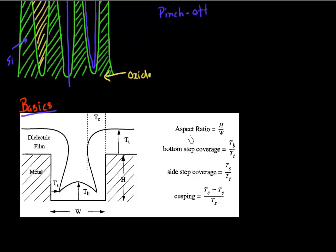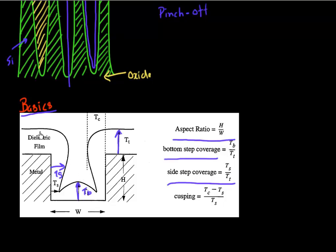The key metrics we use to judge fill quality in high aspect ratio structures are two coverage ratio terms. One is called bottom step coverage, which refers to the bottom thickness versus the thickness on the top. The other is sidewall coverage, which refers to the thickness deposited on the side versus the thickness on the top. For conformal deposition, we want both of these step coverages — bottom and sidewall — to be equal to one. Especially when depositing a liner or barrier material, we want the sidewall step coverage to be exactly one.